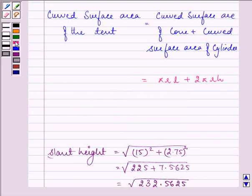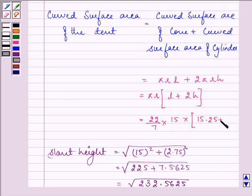Now let's substitute these values. Taking πR common, we are left with L + 2H. That is 22/7 × R, which is 15, × L, which is 15.25, plus 2 × H. And here H is H₁, that is of the cylinder, 5.5. So 5.5 into 2, remember getting multiplied by 2. We have the answer as 1237.5 meter square.